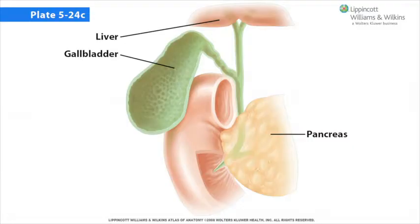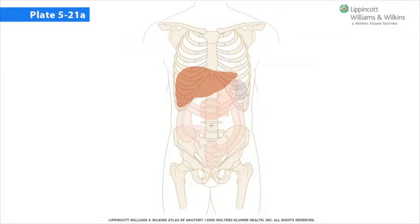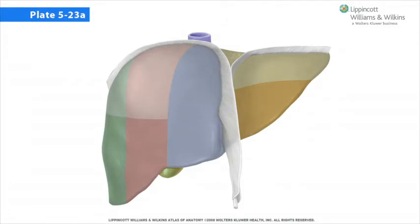The liver, the gallbladder, and the pancreas bud off of the embryonic gut tube during development and are all intraperitoneal. All three organs are connected to the digestive tract via ducts. The liver occupies all of the right hypochondriac region, most of the epigastric region, and extends into the left hypochondriac region as well. It reaches as far superiorly into the thorax as the level of the fifth rib. Inferiorly, it does not project much beyond the costal margin, so the liver is almost entirely surrounded by the thoracic cage. The liver has a superior convex diaphragmatic surface and a flat inferior visceral surface.